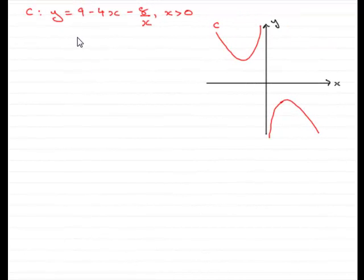Now, in this part of the question, we're given that the curve C has an equation y equals 9 minus 4x minus 8 over x, where x is greater than 0. We've got to find the equation of tangent at the point P, where the x-coordinate is 2.